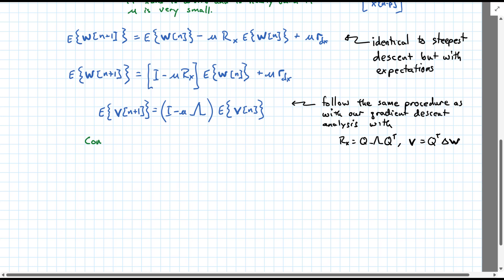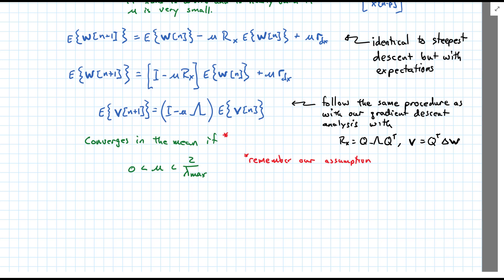And we can see that this converges in the mean. As opposed to straight up convergence. If mu is greater than 0 and less than 2 over lambda max. But there's a caveat. Remember, before we assumed that w and x were independent of each other. If mu is very small.